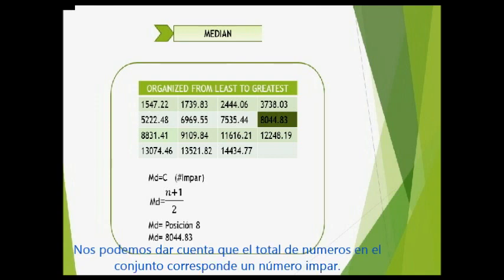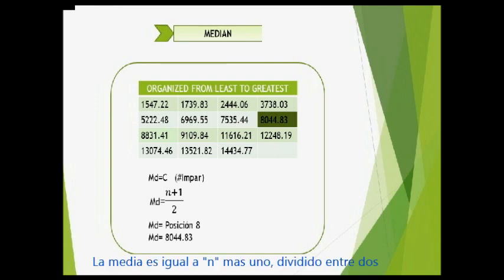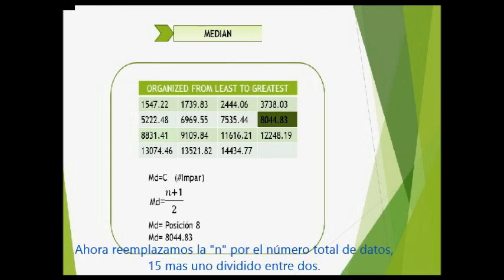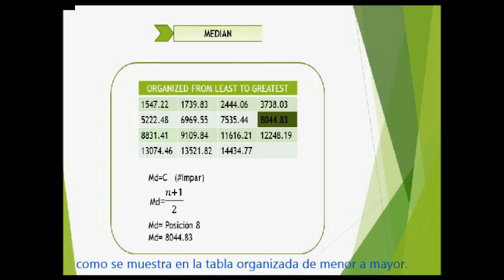At this sample size, we can determine what is the total number in the set. It has an odd number, which is why we use the following formula. Median position equals n plus 1 divided by 2, where n is the total number of the set. Now we replace n with the total number of data: 15 plus 1 divided by 2. We obtain the median as the data that occupies position 8 in the table organized from lowest to greatest.